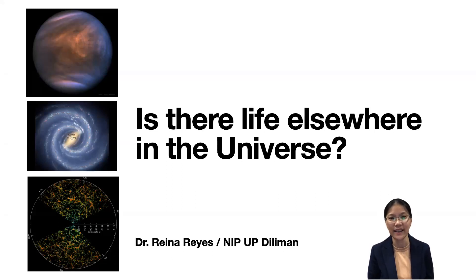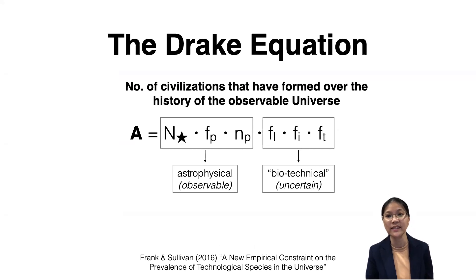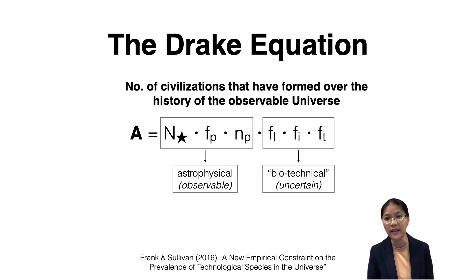Hello again. I'm Dr. Reina Reyes of the National Institute of Physics in UP Diliman, and in this lecture we've been discussing the question: is there life elsewhere in the universe? Previously, we discussed the Drake Equation and the six factors that compose this way of estimating the number of civilizations formed over the history of the observable universe. In this next part, we will talk about the first three astrophysical factors: N star, F sub P, and N sub P.